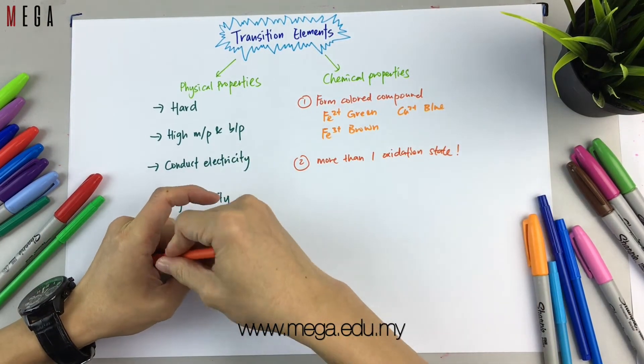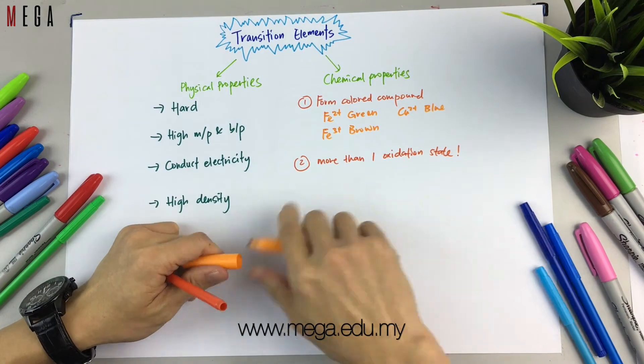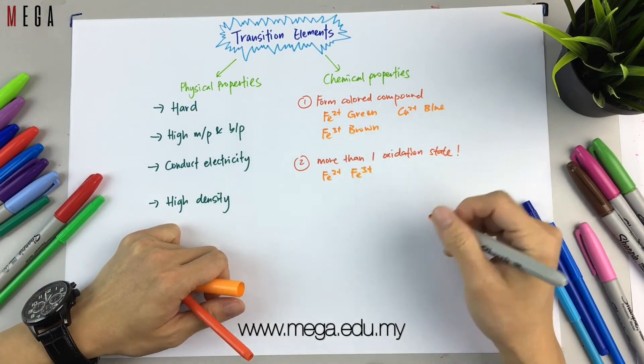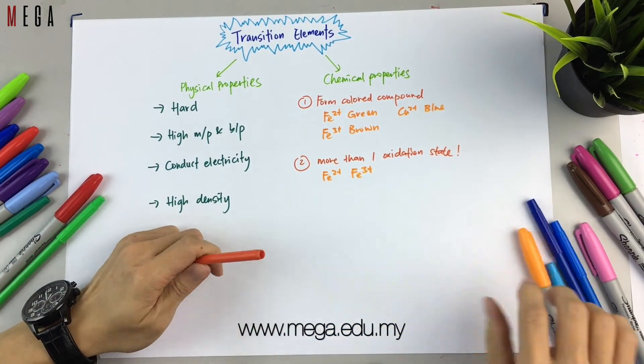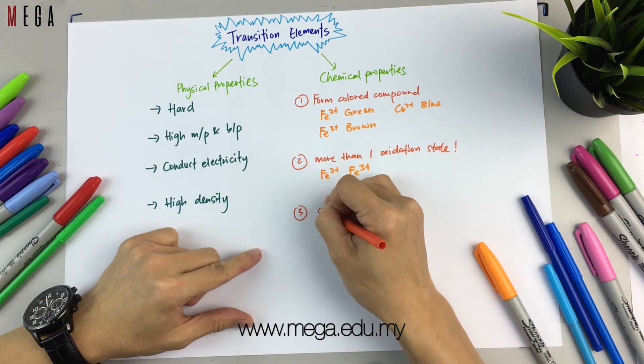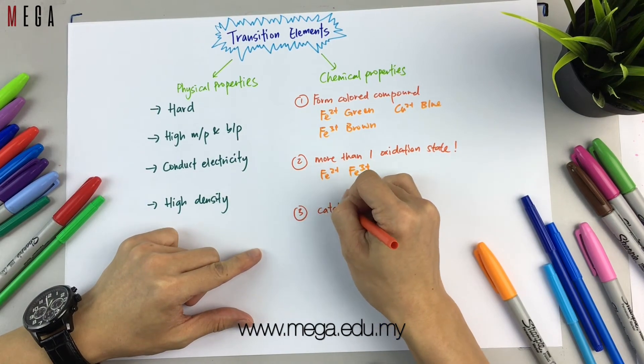Next, transition elements have more than one oxidation state. For example, iron has Fe²⁺ and Fe³⁺ — two different oxidation states.